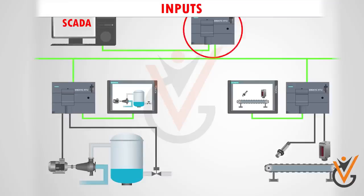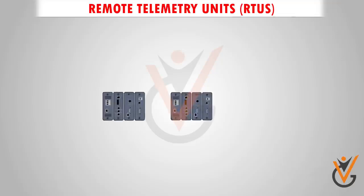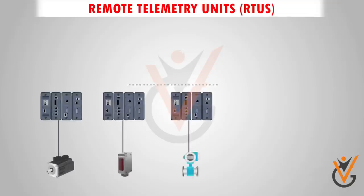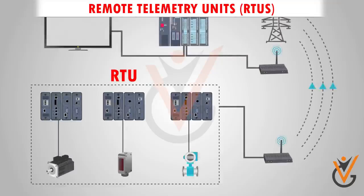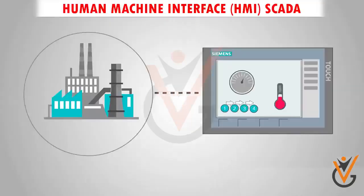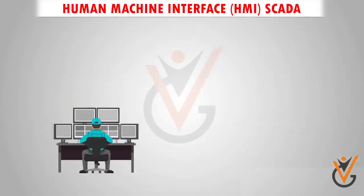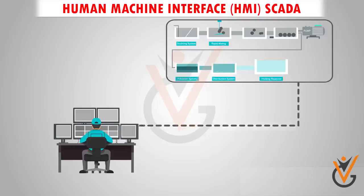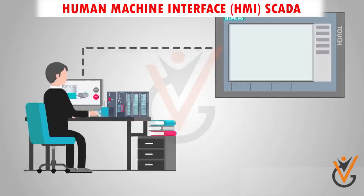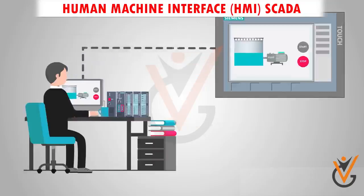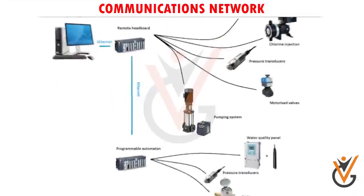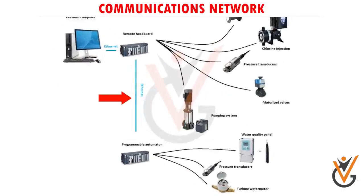Your SCADA system still needs a way to collect this data and report it in a meaningful way. That's where RTUs come into play. A Remote Telemetry Unit, also known as a Remote Terminal Unit (RTU), serves as a local collection point for gathering reports from sensors and delivering commands to control relays. HMIs software is a computer master station system that processes data and allows a human operator to manage and control the system. HMIs provide the human operator with information gathered from multiple RTUs. The communications network connects telemetry and SCADA at remote sites; one of the most common communications technologies today is Ethernet.